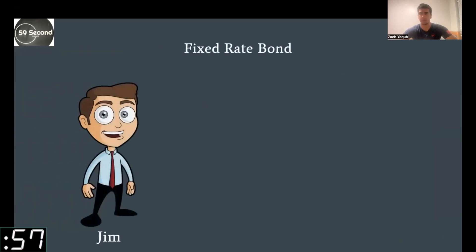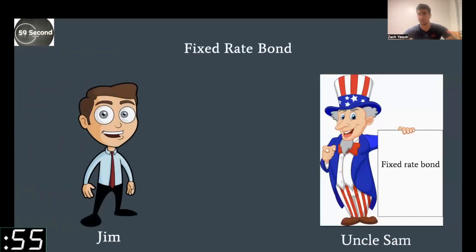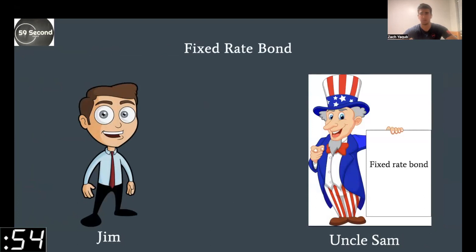What are fixed rate bonds? This is Jim, and this is Uncle Sam, who is issuing a fixed rate bond. Jim is going to give Uncle Sam $100 today — this is the par value, or face value.